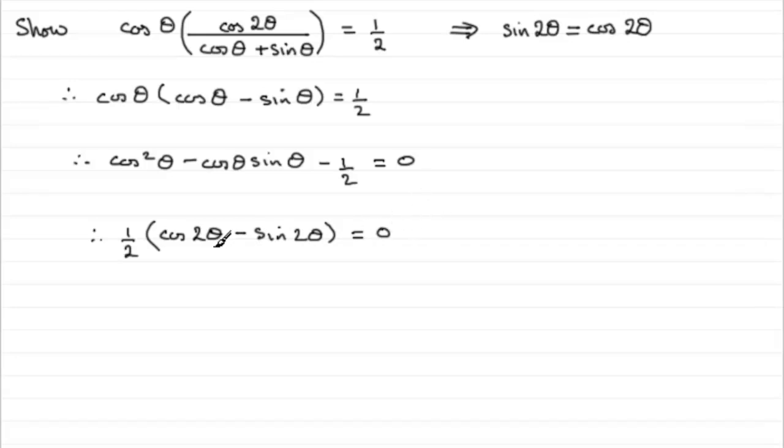And what we could do is multiply both sides by two, and that's going to leave us with cos 2θ minus sin 2θ equals two times zero. Well, that's clearly zero. And then you can see we're basically there now.